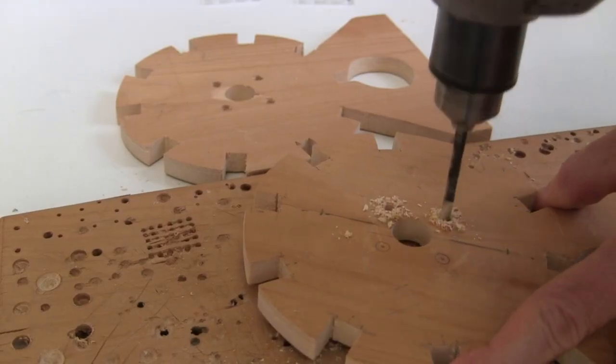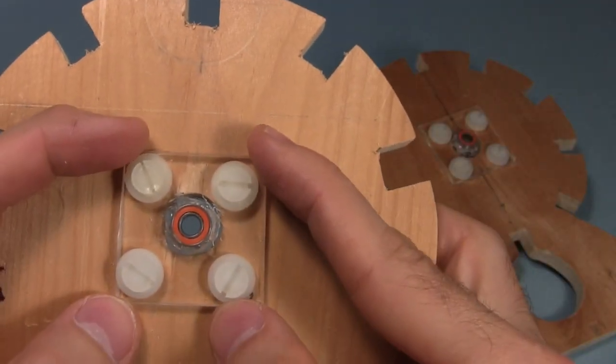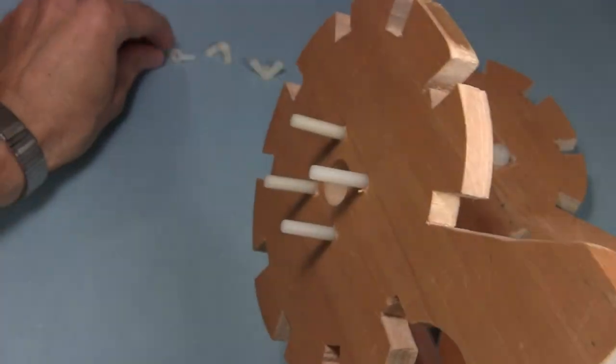After drilling a few more holes in the end pieces, I bolt the bearing plates in place. Notice that while they're still loose, the holes in the plates are big enough to allow me to adjust the placement of the bearings as needed.